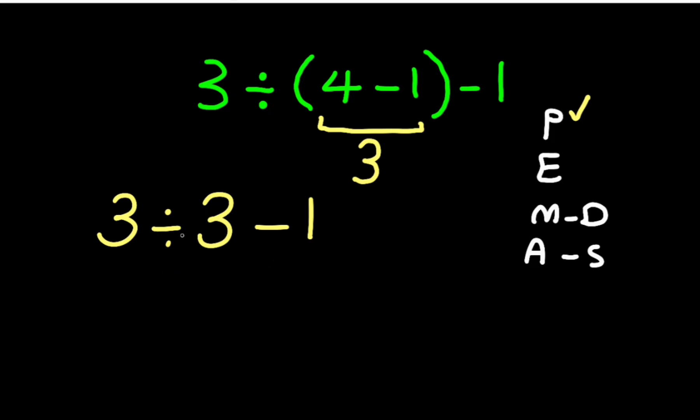So we have to start with this division first. 3 divided by 3 equals 1. Now 1 minus 1 equals 0. So the final answer is 0. Thank you for watching.